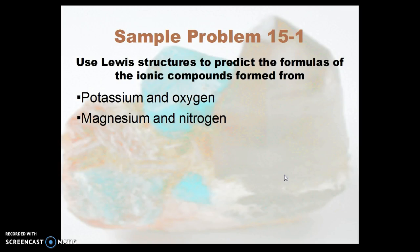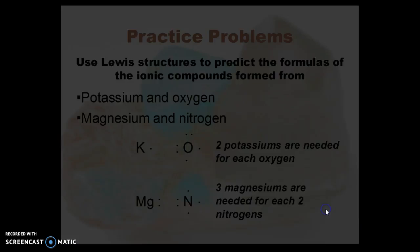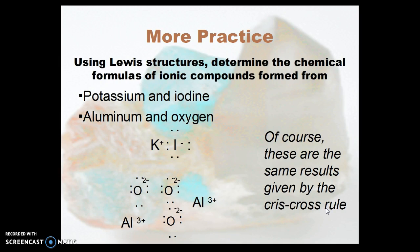Now you try it: potassium and oxygen, magnesium and nitrogen. Two potassiums are needed for each oxygen, and three magnesiums are needed for two nitrogens. That gives us K₂O and Mg₃N₂, the same results given by the crisscross rule.